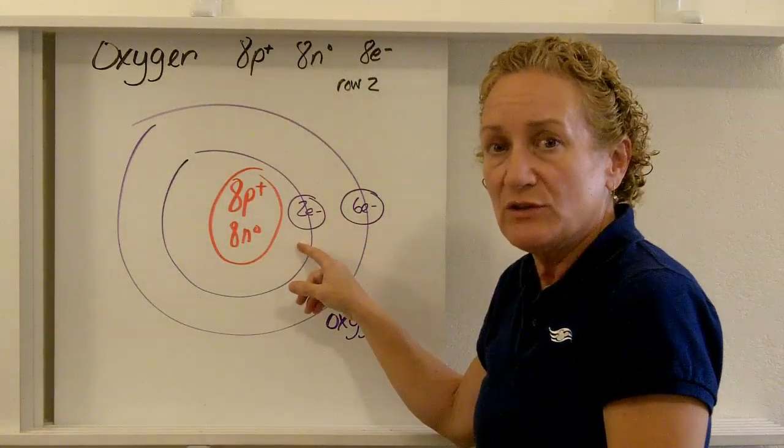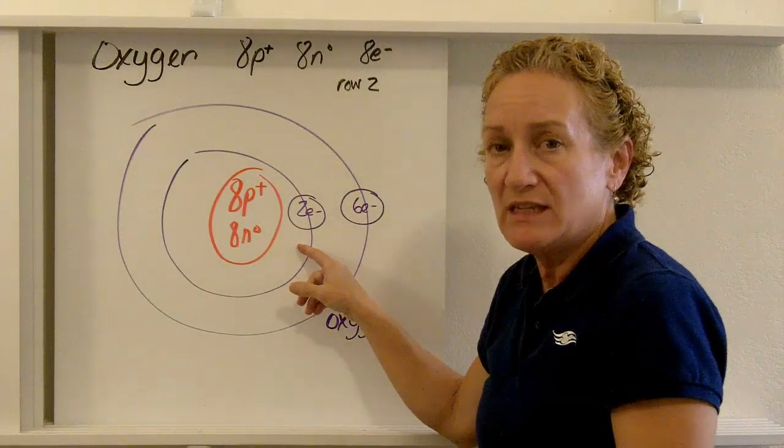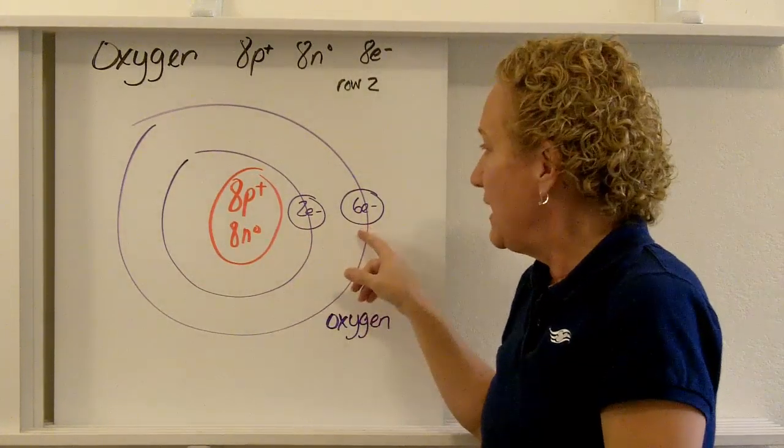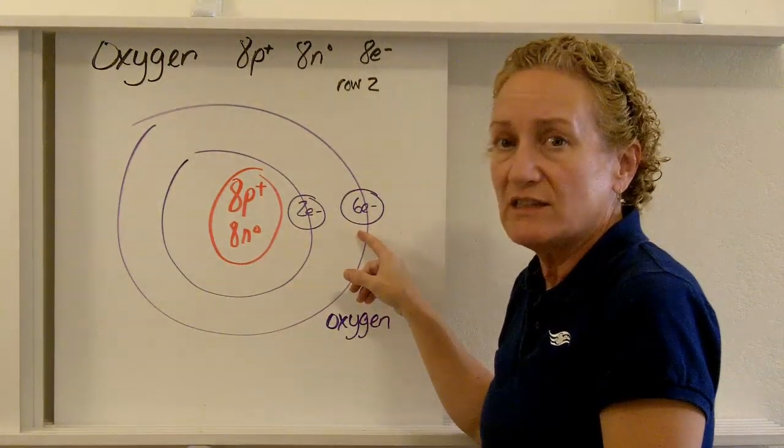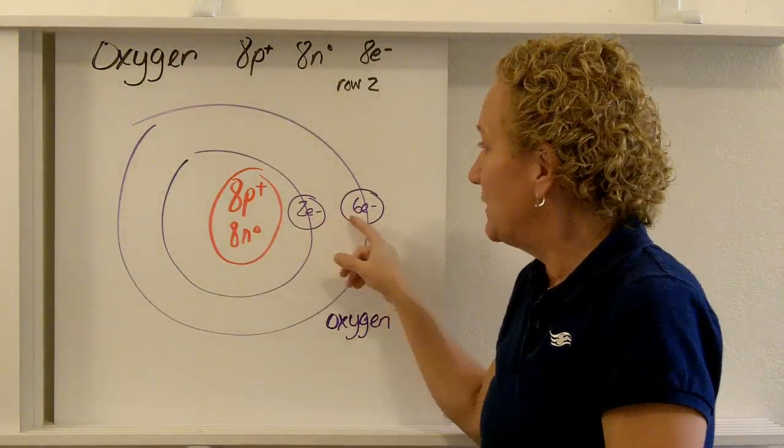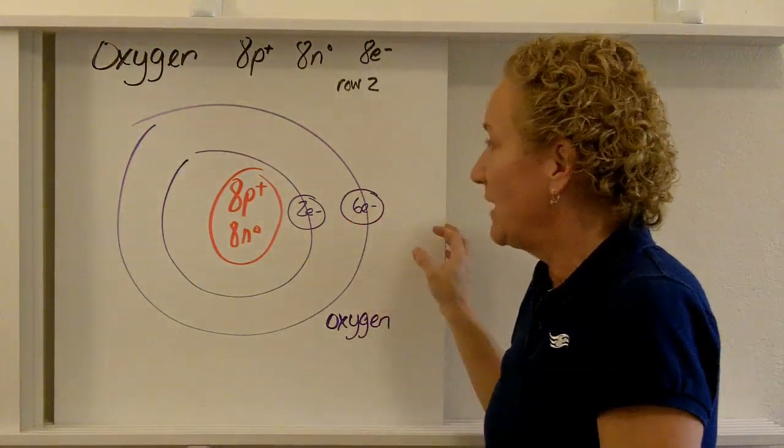Eight minus two is six, so I have six left to place somewhere. And they're going to go on the next energy level, six electrons in the next energy level. So I have two plus six equals eight. It's oxygen. I'm good.